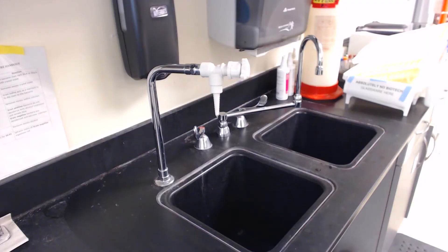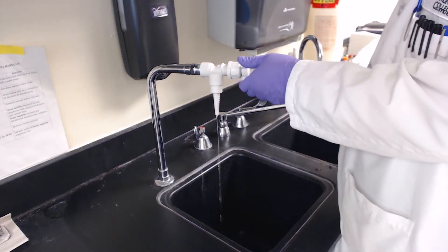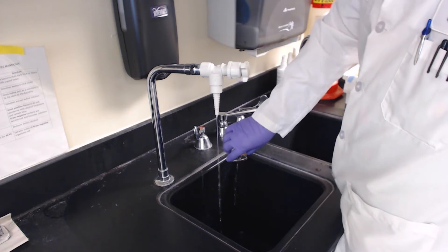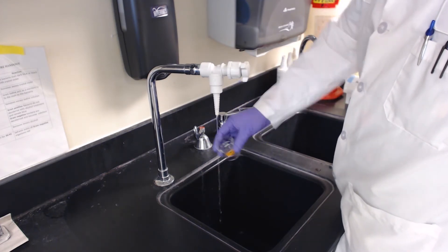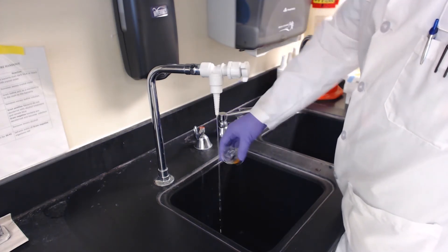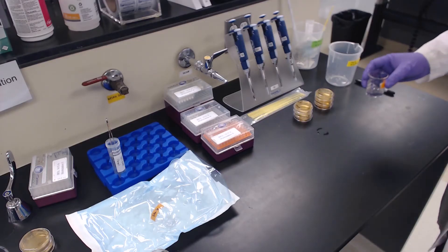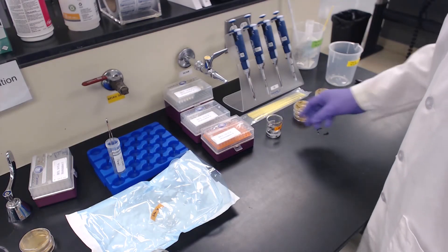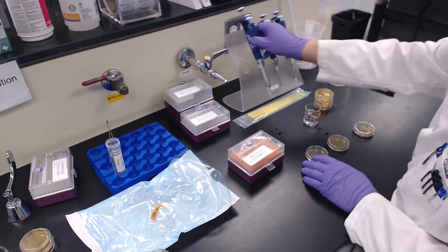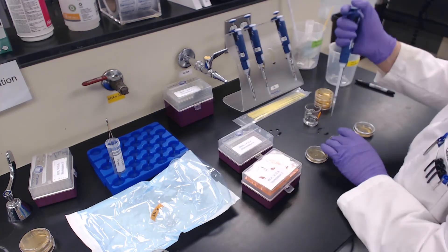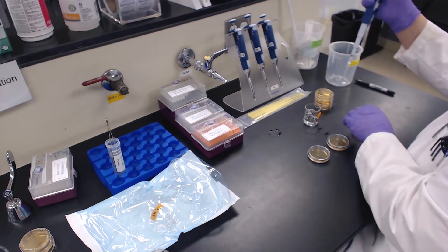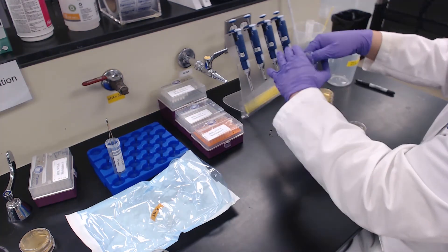Second beaker: As before, ensure your collection beaker is rinsed three times with the water source before collecting the final amount required. Again, transfer and spread 10, 50 and 100 microliters of the sample to the corresponding plates.